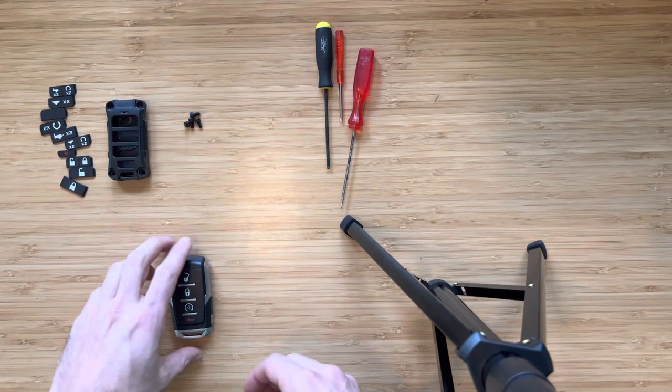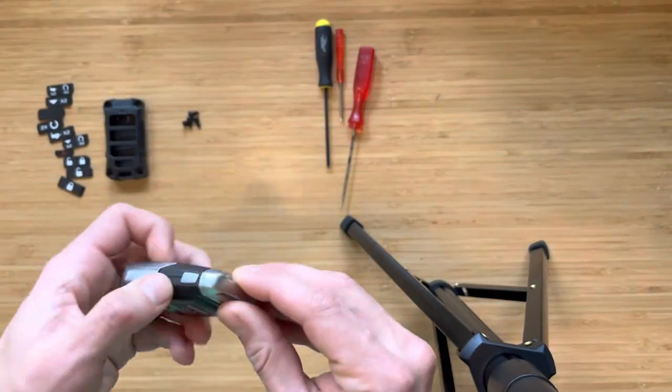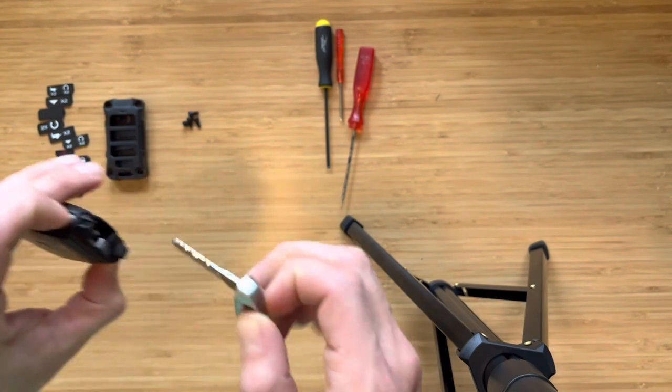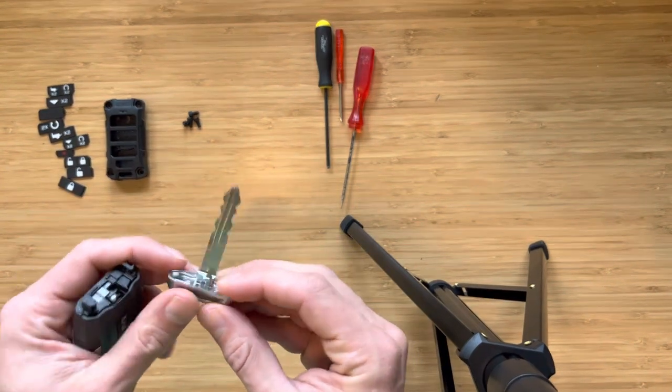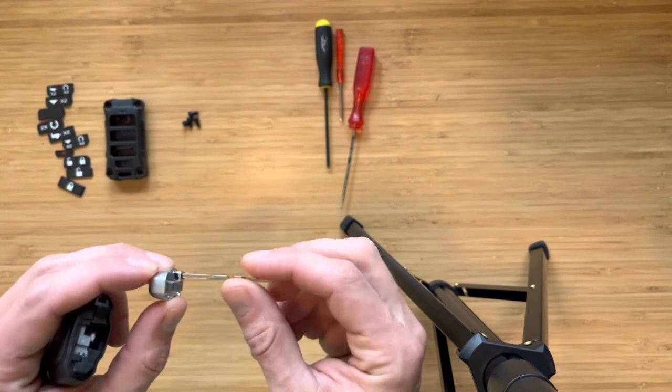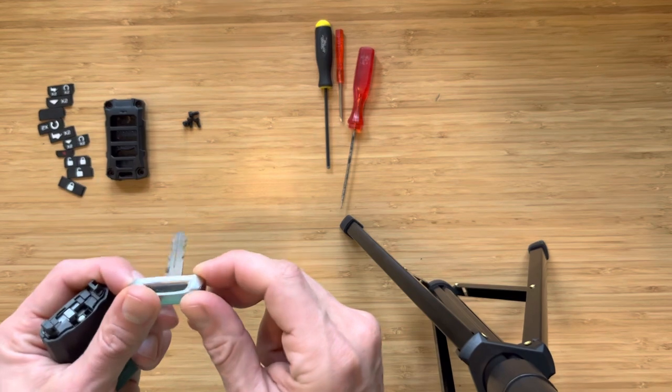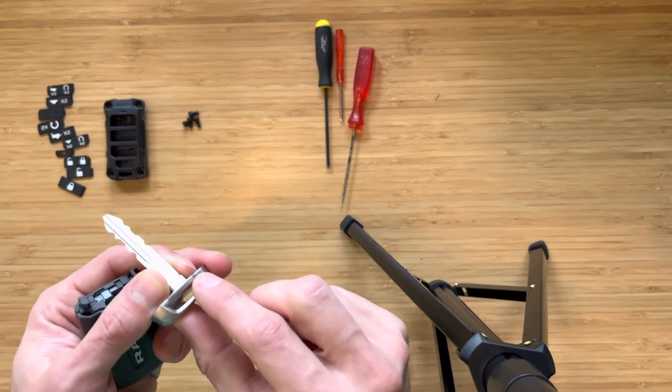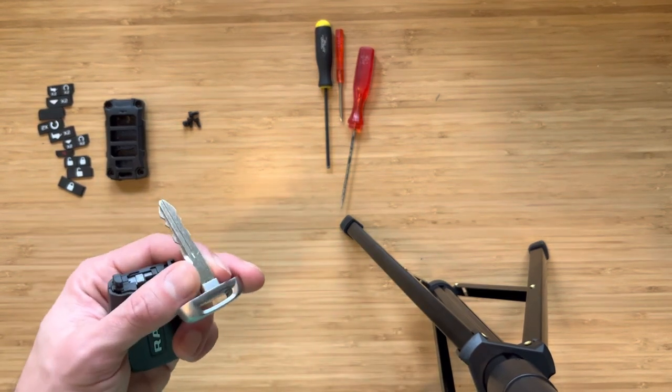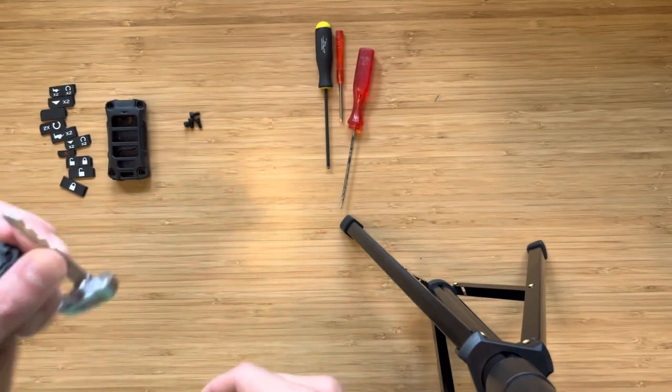First thing you want to do is remove the key, and I will set this to the side. There is a process to remove this portion of the key from this piece here and stick it inside of our fob case, and I'll talk a little bit about that later.